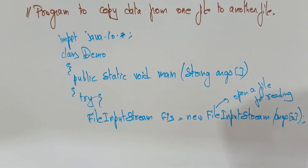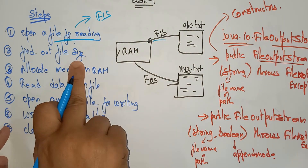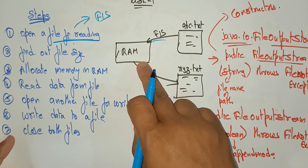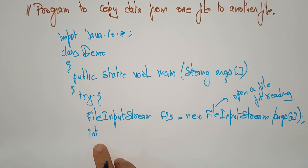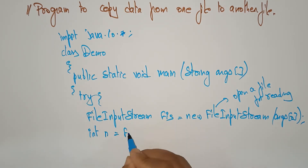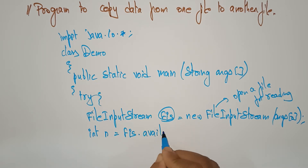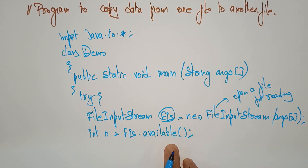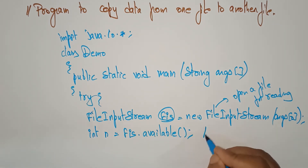The second step is to find out the file size. When you try to read, you first find out the file size so you can allocate memory in RAM. A FileInputStream returns the size, so: int n = fis.available(); The available() method tells the size of the file, and that size is copied into n — whether it's 2 bytes, 4 bytes, or 10 bytes.